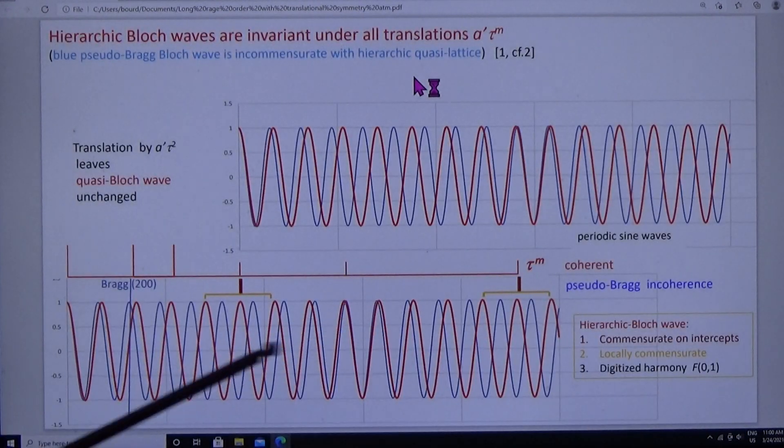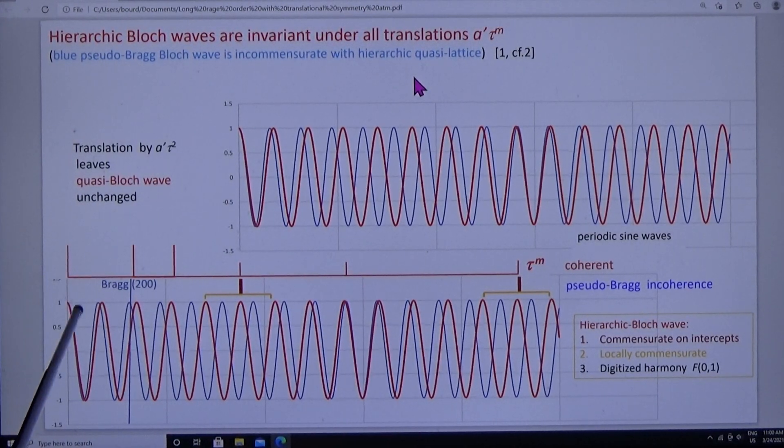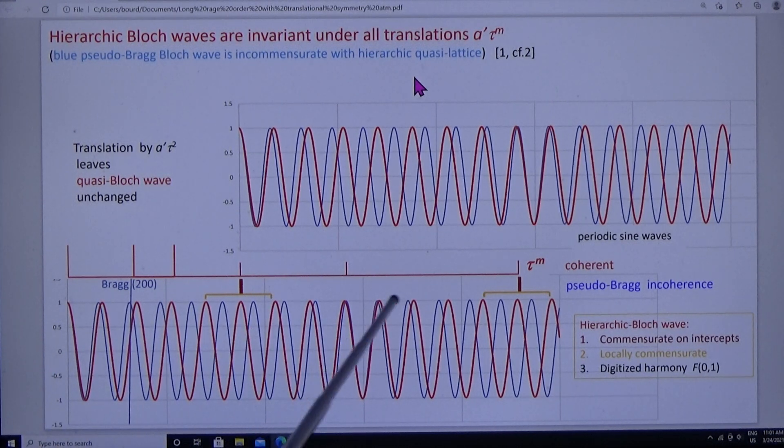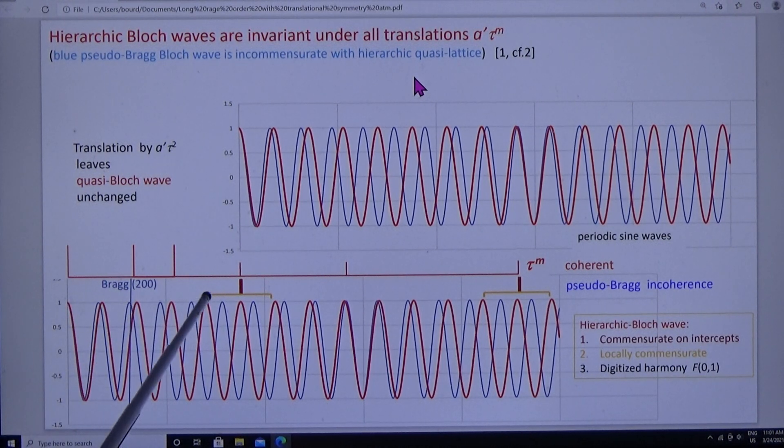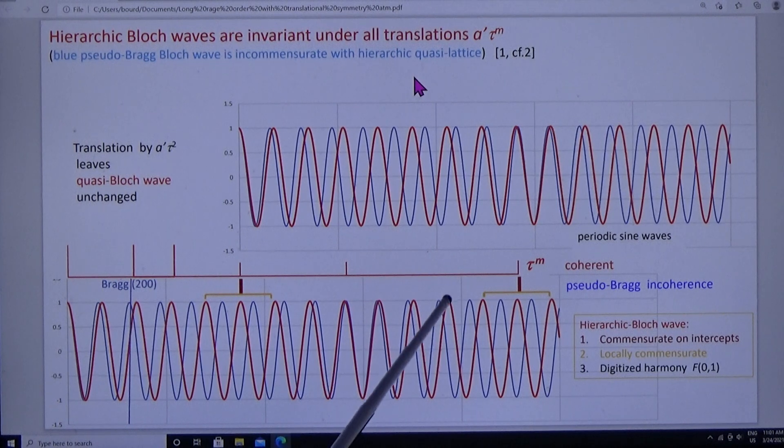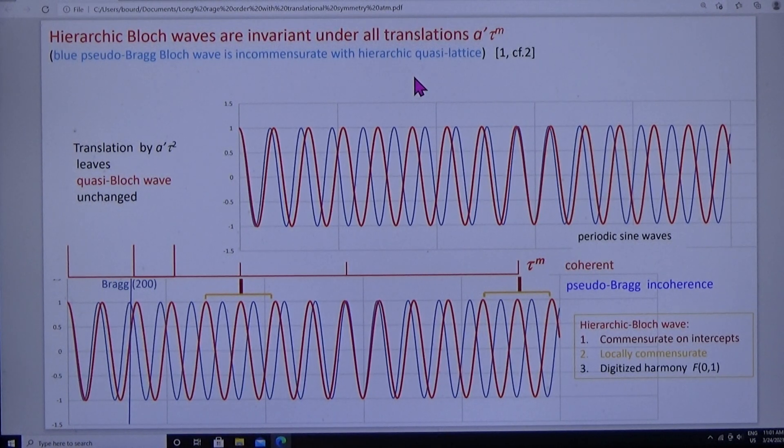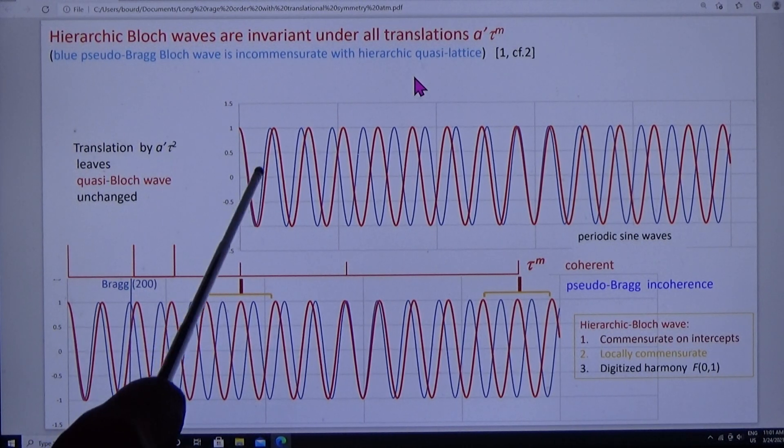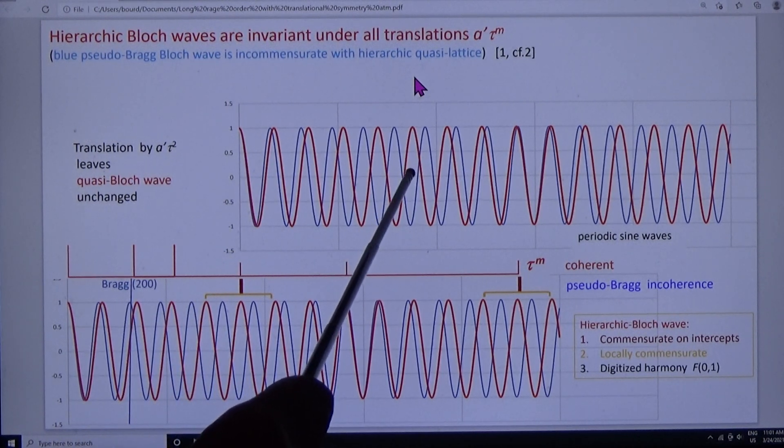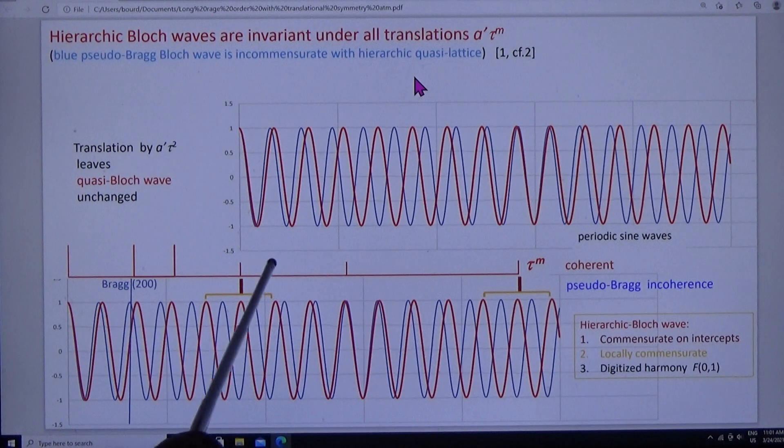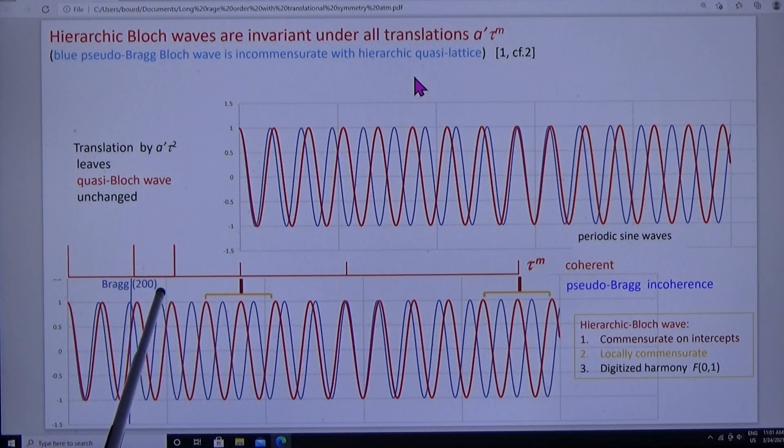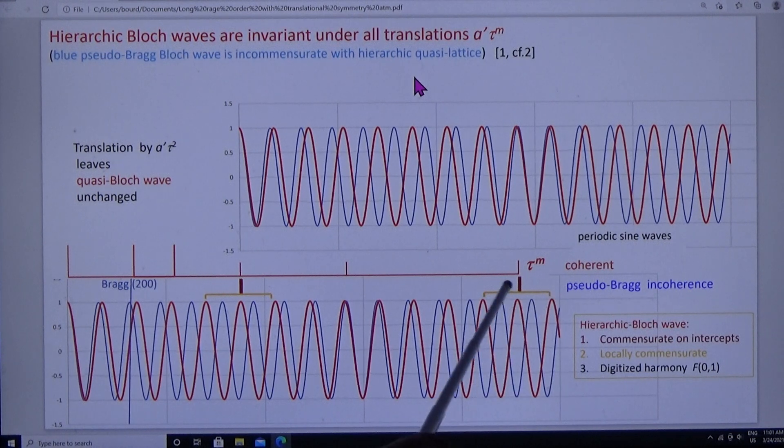And we're going to illustrate that with the Bloch wave. What is a Bloch wave? You can think of it as the lattice image in the two-beam condition. Look at the blue wave. It's commensurate with the unit cell. It's commensurate with all unit cells periodically repeating in the crystal. But it's incommensurate, look at the blue wave, with the geometric intercepts in the quasi-lattice. However, if we stretch the blue wave by the metric function, we get the red quasi-Bloch wave. And this is commensurate with the geometric lattice, commensurate not only long range, but also short range.